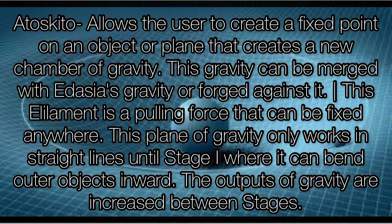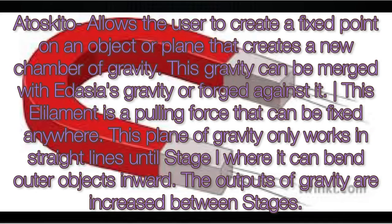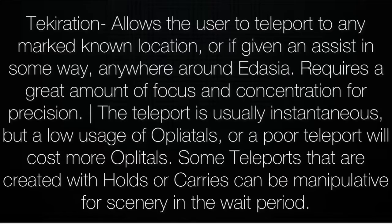A taskito allows the user to create a fixed point on an object or plane that creates a new chamber of gravity. This gravity can be merged with adagia's gravity or forged against it. This element is a pulling force that can be fixed anywhere. This plane of gravity only works in straight lines; since stage one, where it can bend outer objects inward, the outputs of gravity are increased between stages.